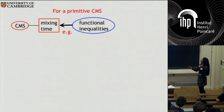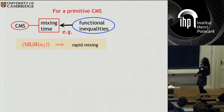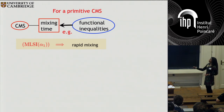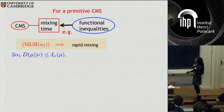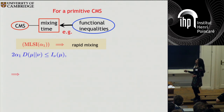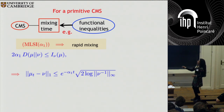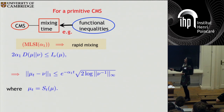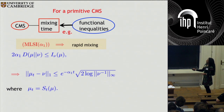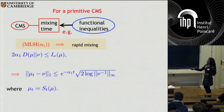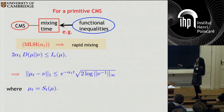An example of a mixing time bound obtained from a functional inequality: the modified log Sobolev inequality of constant alpha_1 implies what is called rapid mixing. This was a result found by Diaconis and Saloff-Coste. If this inequality holds for a classical Markov semigroup, then the following inequality holds, where mu_t is the distribution obtained by evolving the initial distribution by P_t. This shows that the evolved distribution approaches the invariant distribution, with alpha_1 being the modified log Sobolev constant.